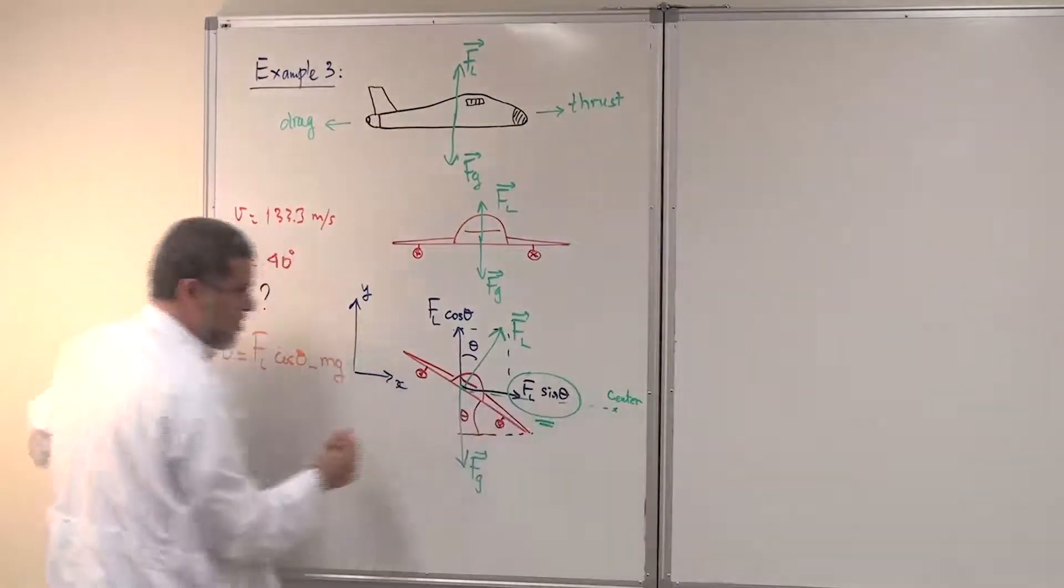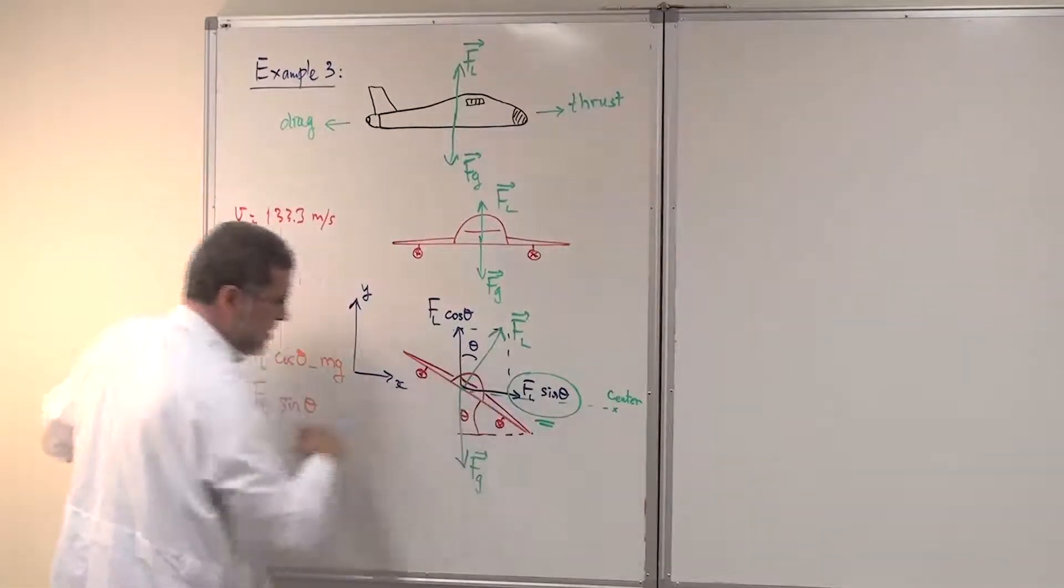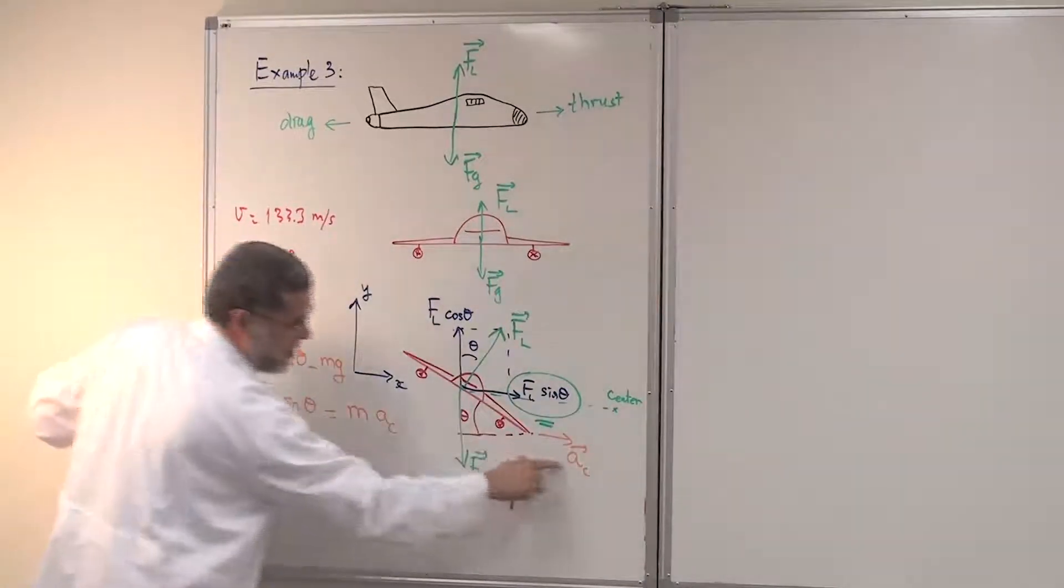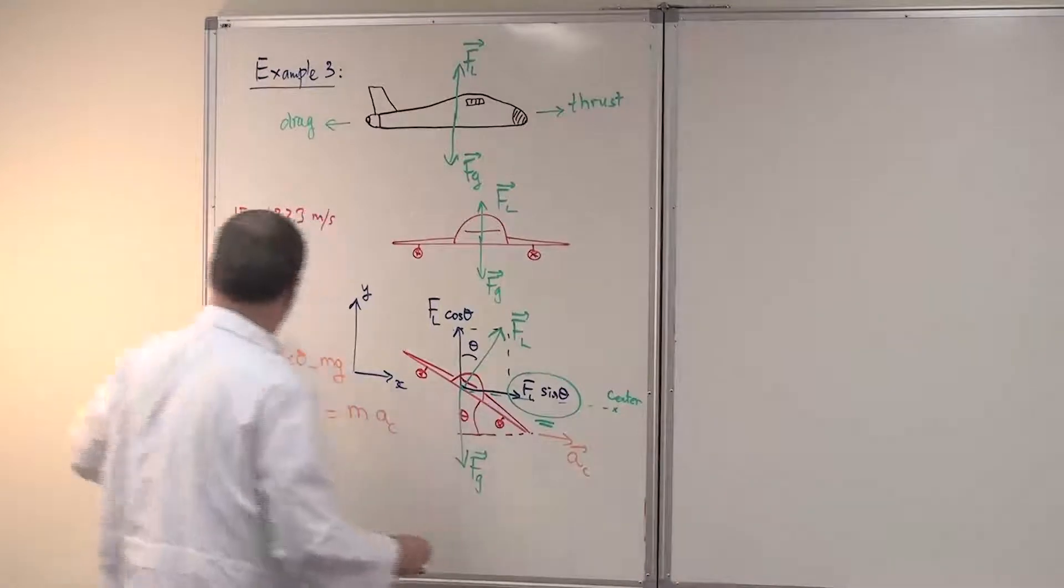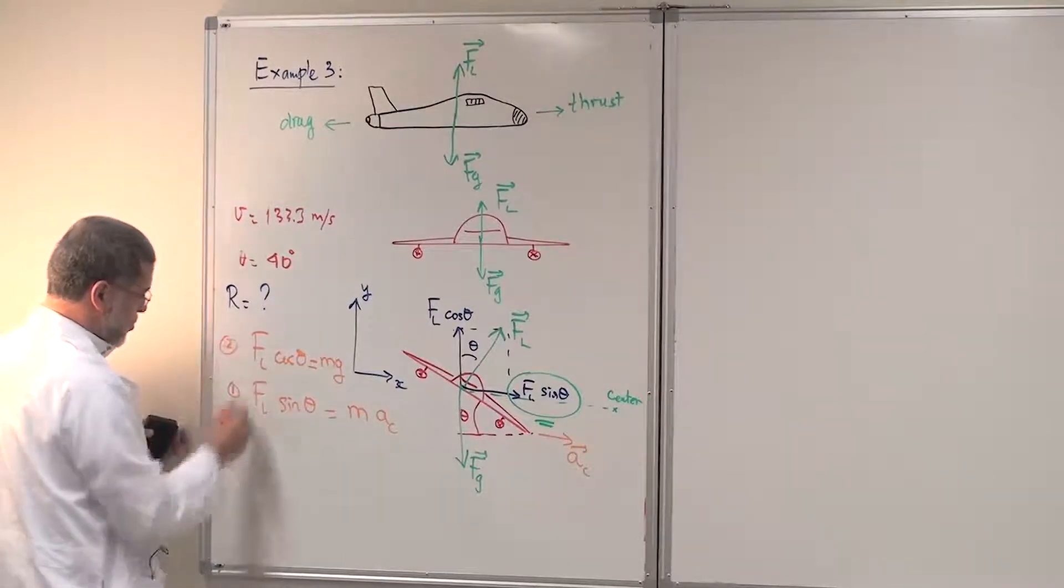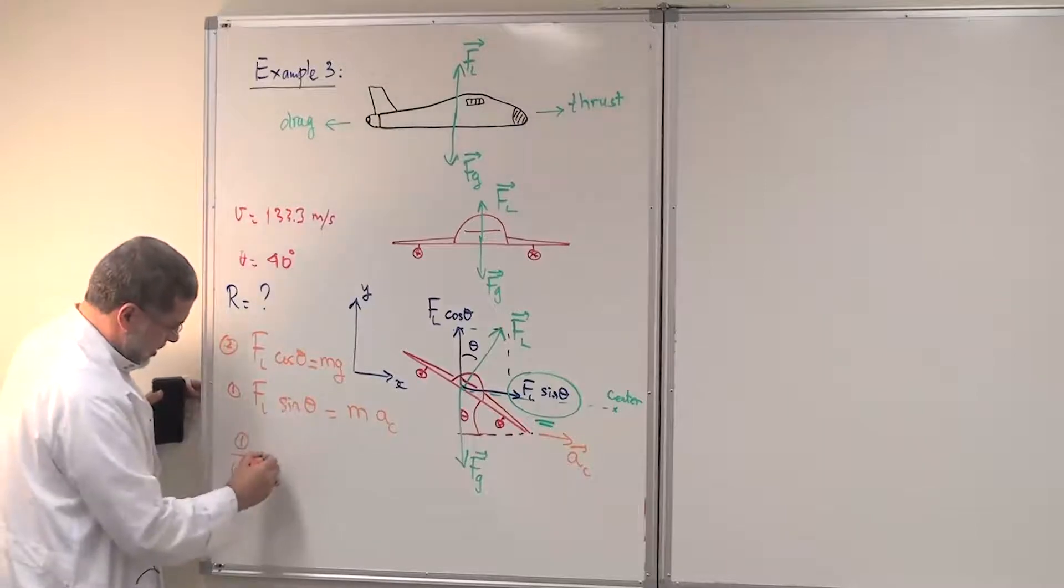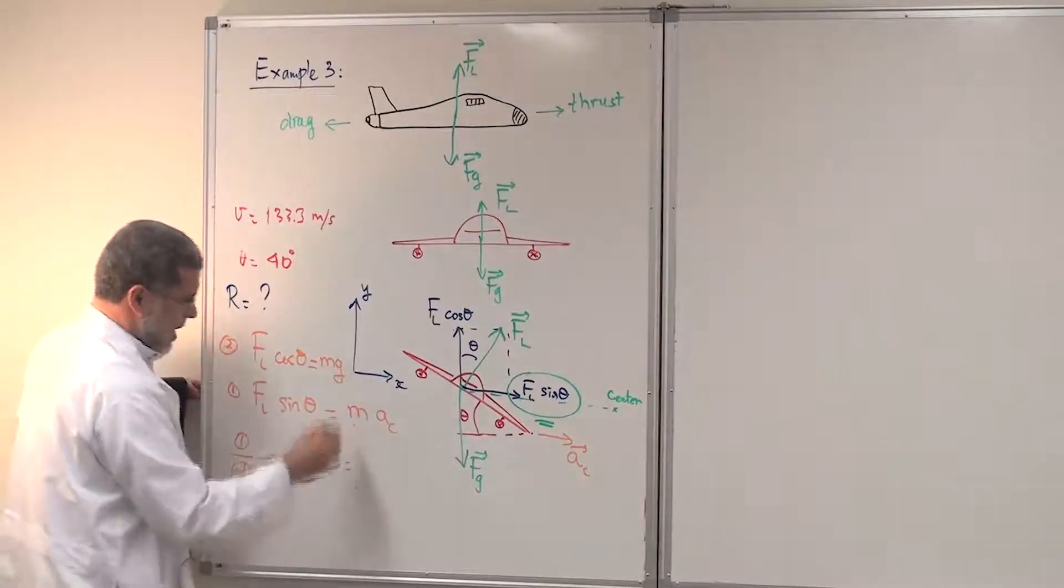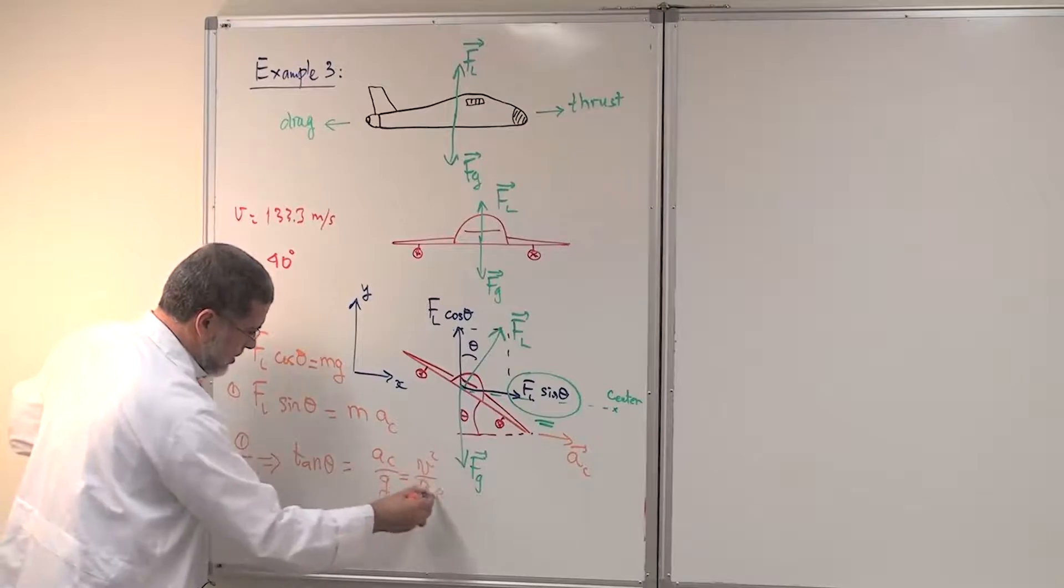Now, along the X axis, let's write the forces. Of course, we have to write FL sine theta and there is no other force along the X axis. This should be equal to M times AC, where AC is also toward the center in the positive direction. So I'm going to change this to the equal sign here. And I'm going to call this equation 1, equation 2. So I'm going to do 1 over 2, divide the two equations. When I divide it, the FL will cancel. And we end up with here, tan theta, which is sine theta divided by cosine theta, equal M, we cancel. It will be AC over G. But we know what is AC, is V squared over R, G.